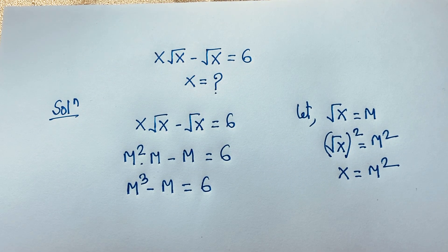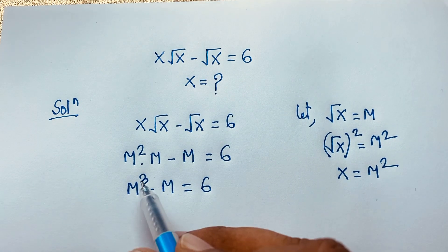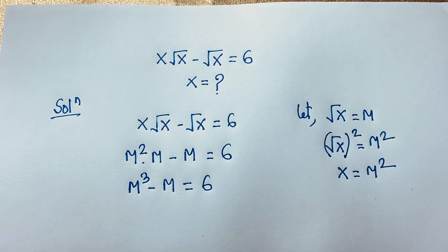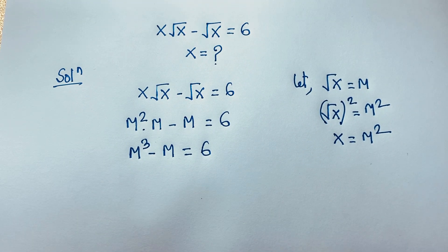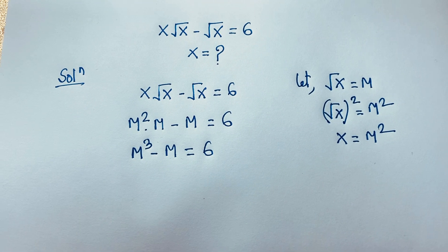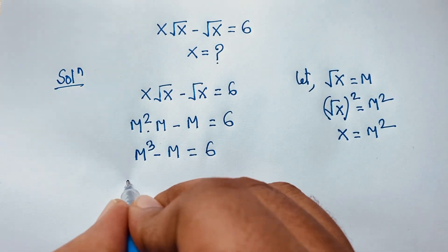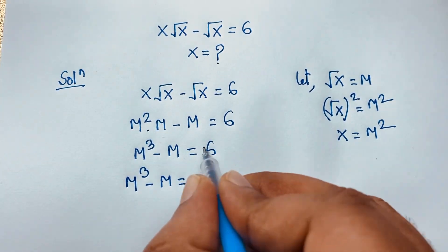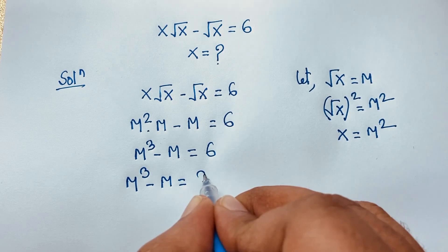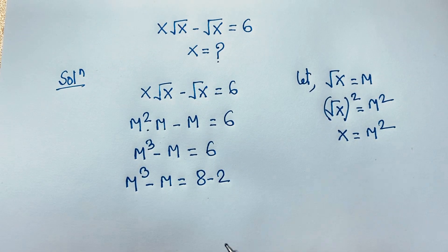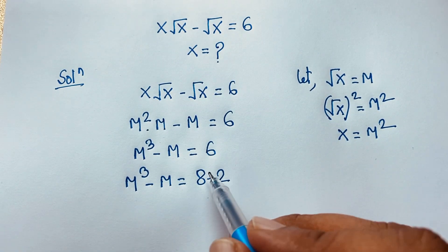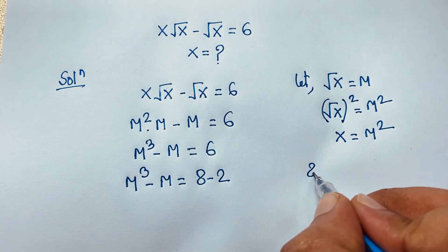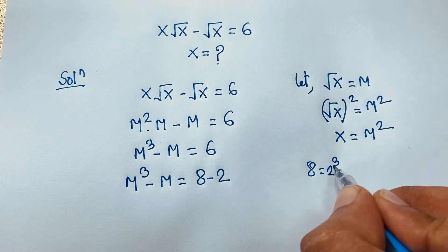This is a cubic equation: m³ minus m is equal to 6. Now notice that 6 can be written as 8 minus 2, which equals 6. We use this observation. Note that 8 is equal to 2 to the power 3.